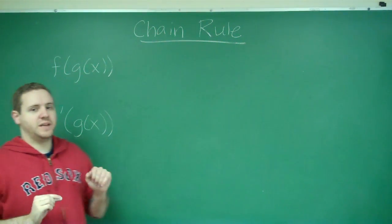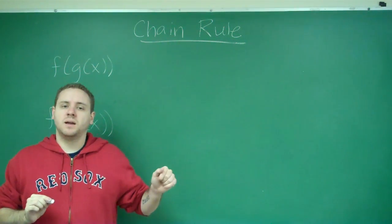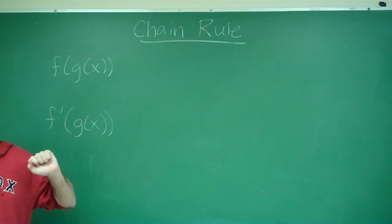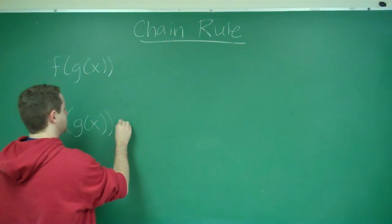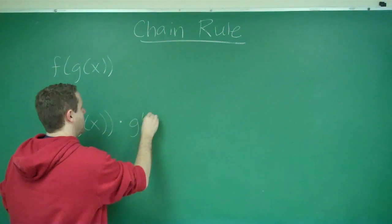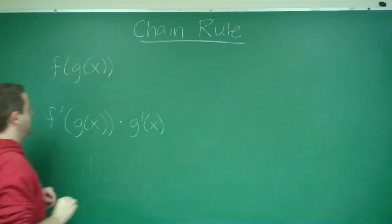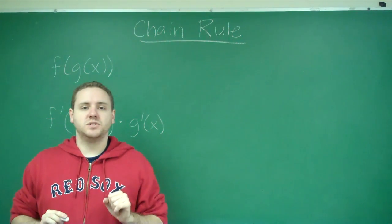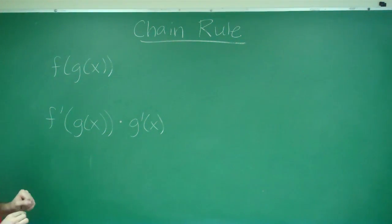You don't change that, but then you have to multiply by the derivative of what was inside, g of x, which would then be g prime of x. So this process is what's called the chain rule.